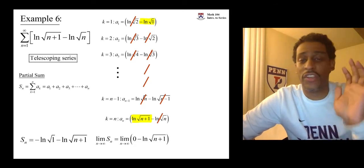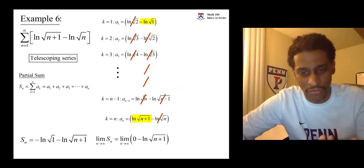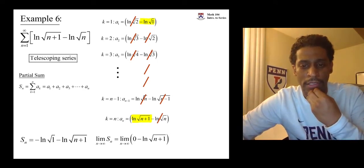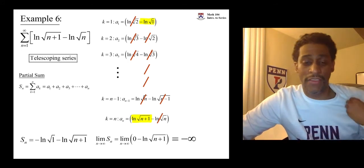Okay? Natural log is one of our slowest growing functions, but it will go to infinity as n goes to infinity. And so we then have that this limit is negative infinity.